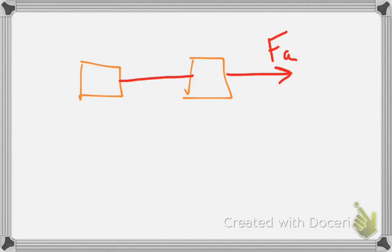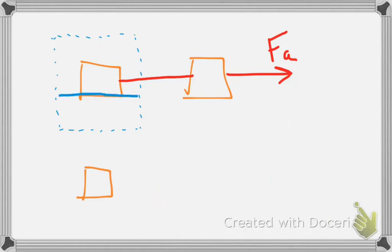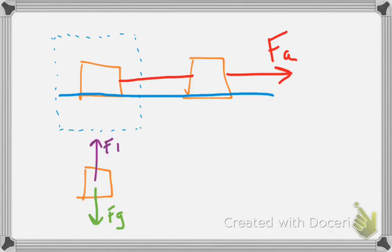What would a Free Body Diagram look like here? The key thing to remember about Free Body Diagrams is that they can only show what's happening on a single mass at any one given time. If we only look at what is inside one box and take a look at all the forces on it — assuming it's sitting on a table being pulled to the right — we have the force of gravity pulling down, the force from the table pushing up, and the force of the string pulling to the right. Those are the three forces on it.